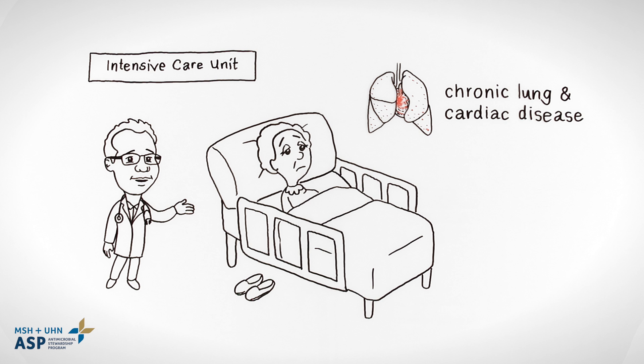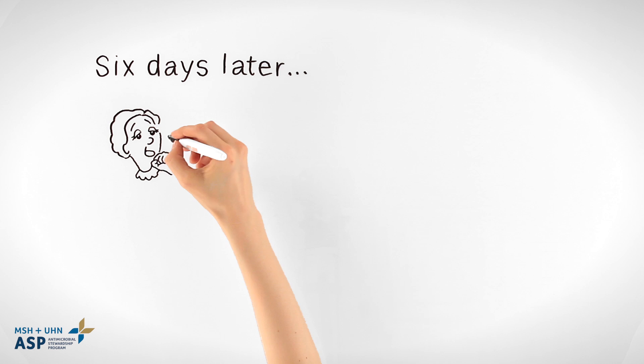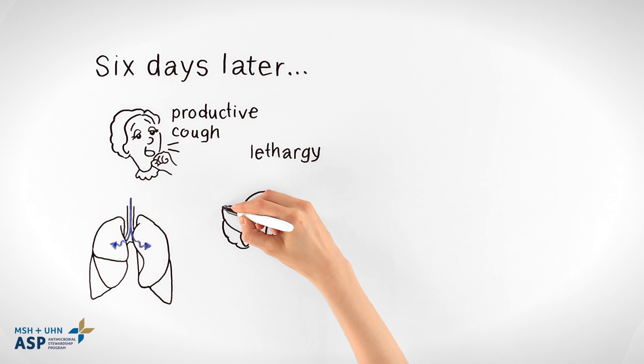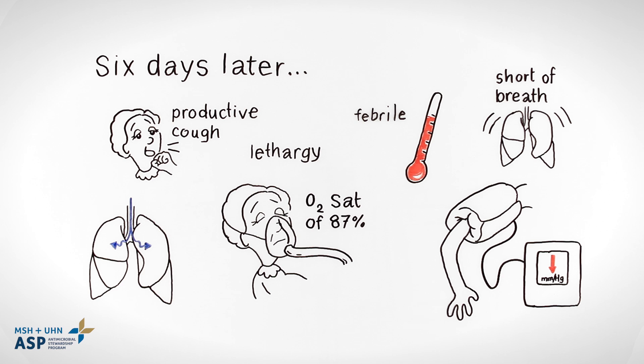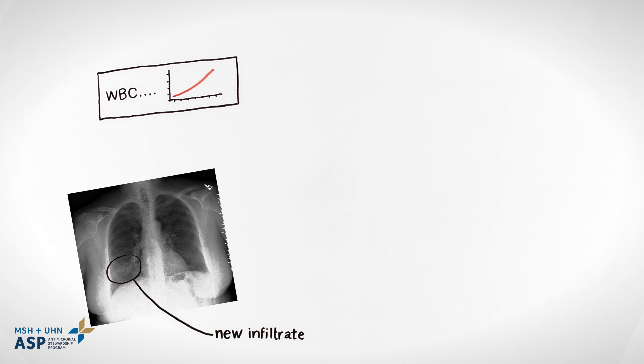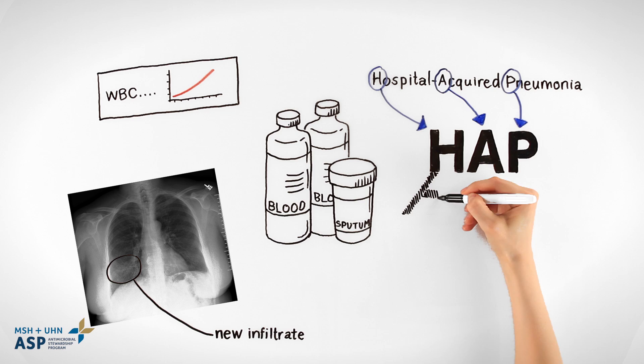Patient AH is an elderly woman with chronic lung and cardiac disease admitted to the ICU following a stroke. On day six, AH developed a productive cough, decreased air entry bilaterally, and lethargy. Her O2 sat was 87% on 15 liters by face mask. She was febrile, short of breath, and her blood pressure had dropped. Her white count was elevated, and a chest x-ray showed a new infiltrate. Sputum and blood samples were sent, and AH was diagnosed with hospital-acquired pneumonia, or HAP.